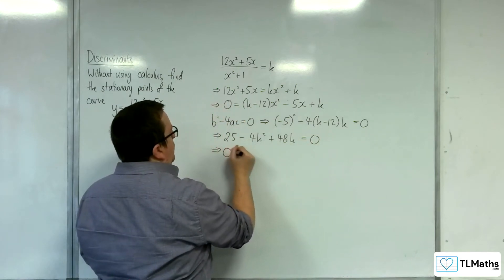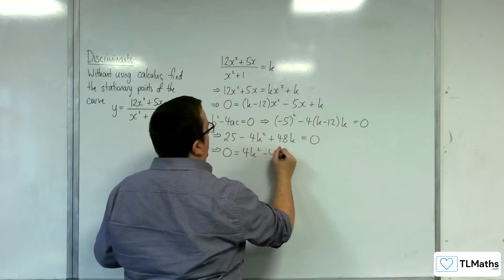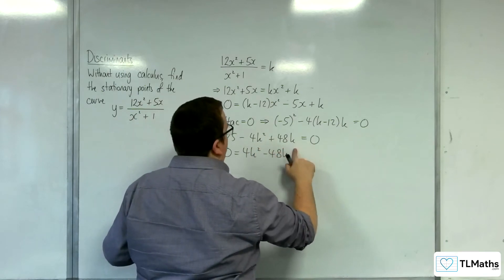I'm going to move everything onto the right-hand side. So, 4k squared take away 48k, take away 25.